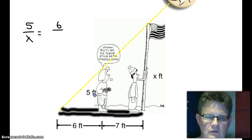And what is the shadow of the flagpole? It's not seven, it's not six. It's seven plus six: thirteen.